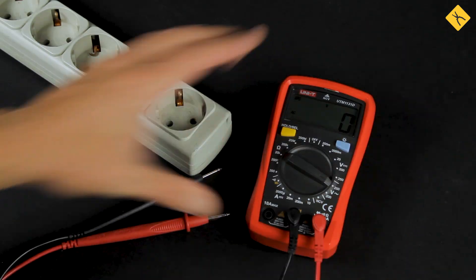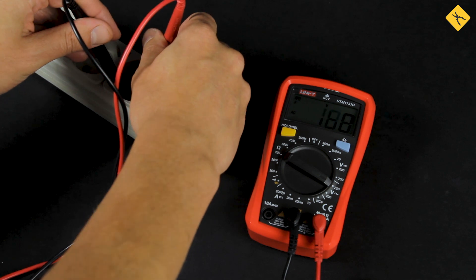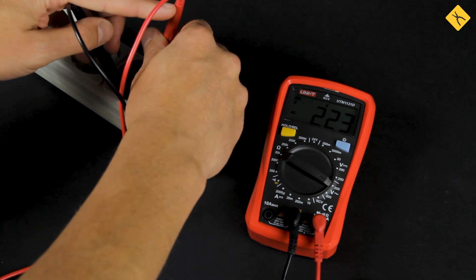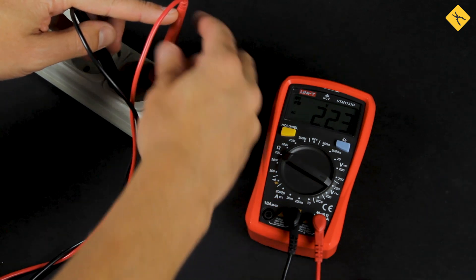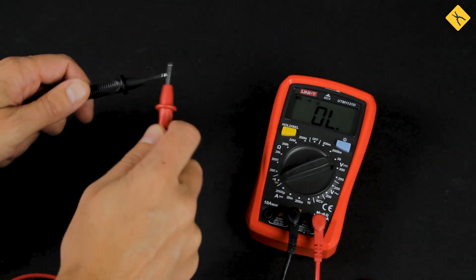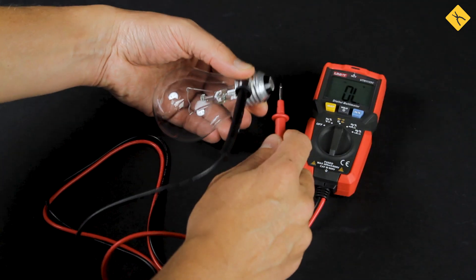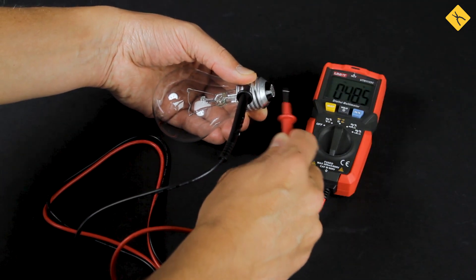A digital multimeter is very easily equipped with additional functions. For example, a data hold function, holding the measurement results on the display. Almost all modern digital multimeters are equipped with this function. Continuity tests in most modern digital multimeters are accompanied by sound notifications. This is a lot more convenient than relying only on measurements shown on the display.